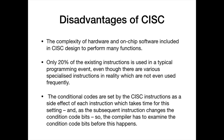Disadvantages of CISC: The complexity of hardware on chip software included in CISC design performs many functions. Only 20% of the existing instructions are used in a typical programming event, even though there are various specialized instructions in reality which are not used frequently. The conditional codes are set up by CISC instructions as a side effect of each instruction, which takes time, and as the subsequent instruction changes the conditional code bits, the compiler has to examine the conditional code bits before this happens.